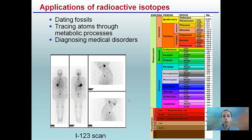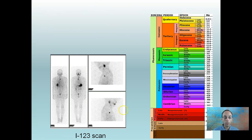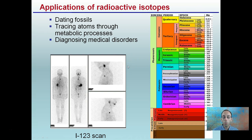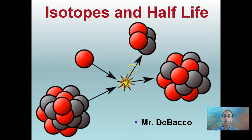Carbon-14, with its very long half-life of 5,730 years, is great for fossil dating but not ideal for radiology. For fossil dating, we can determine how old those rocks, fossils, or plants were based on the decay that occurred since that carbon was first assimilated. Hopefully this helps explain a little bit about isotopes and half-life.